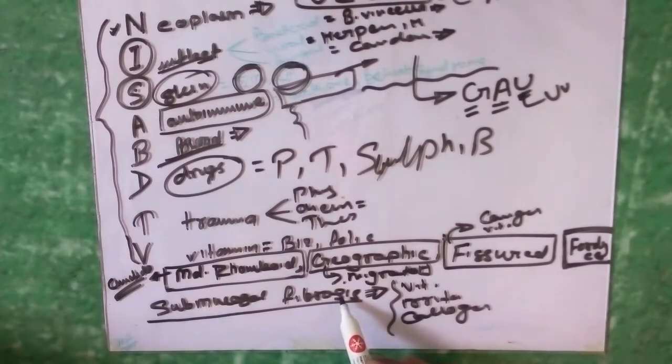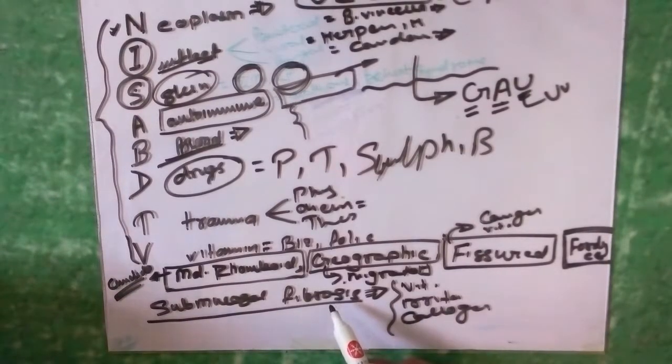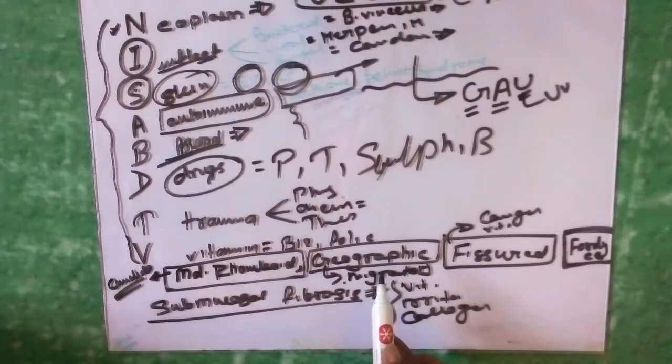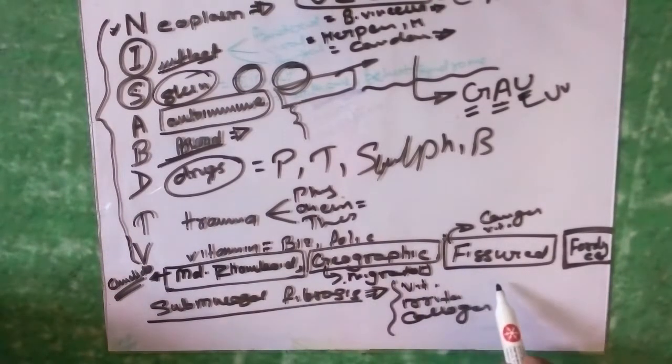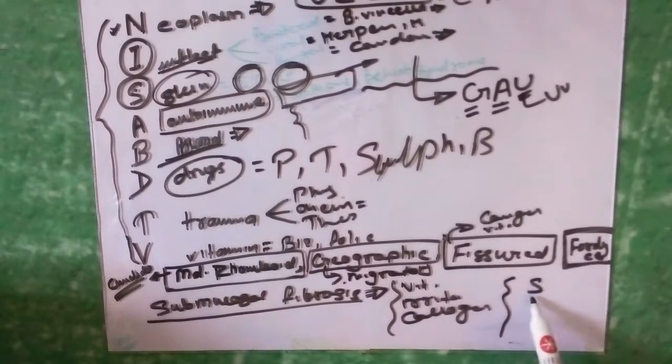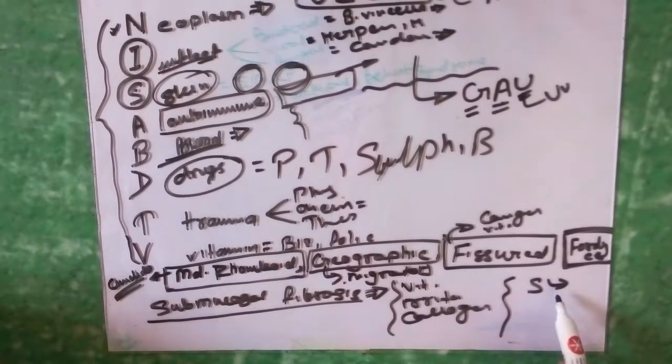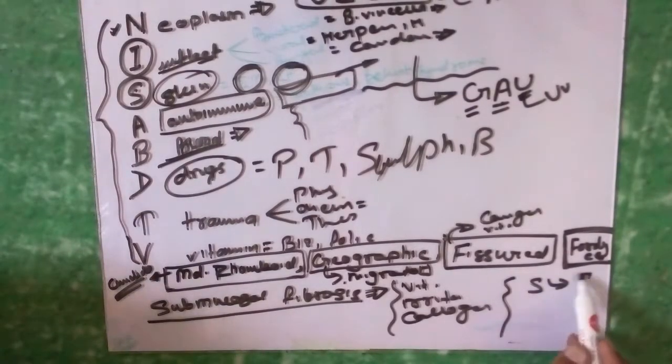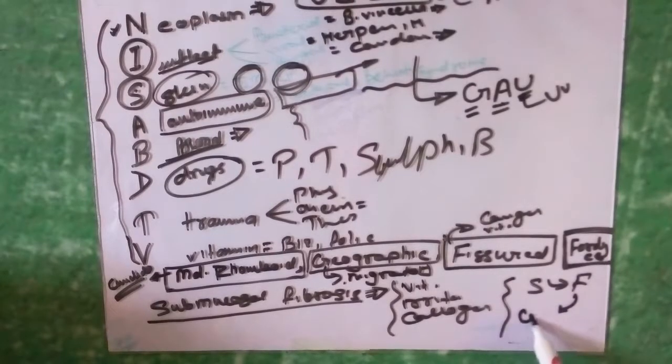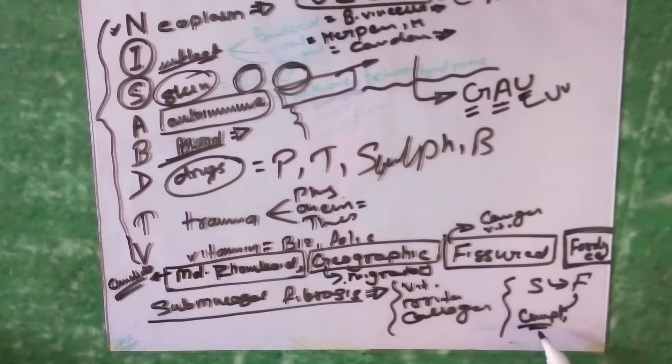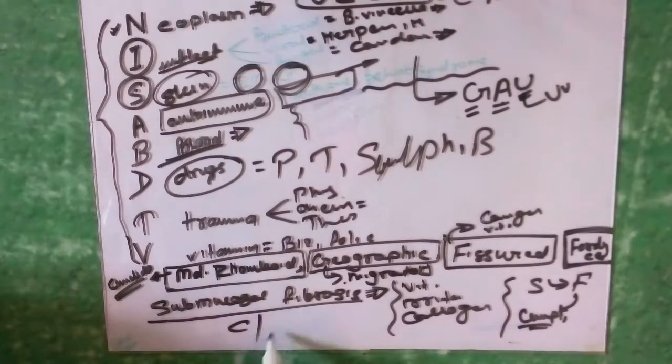What are the stages? How does it proceed to leukoplakia or malignancy? It starts from stomatitis and causes fibrosis, and ultimately when it undergoes complication it can cause malignancy or leukoplakia. These are the stages.